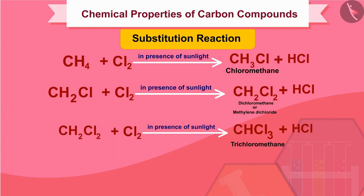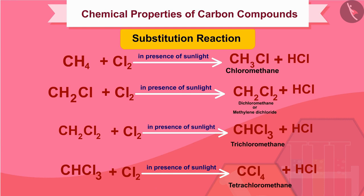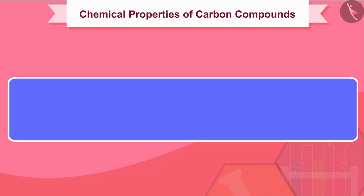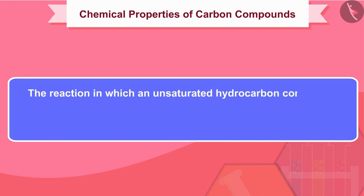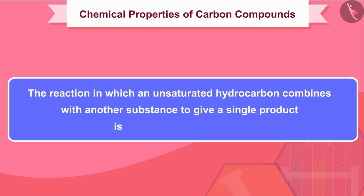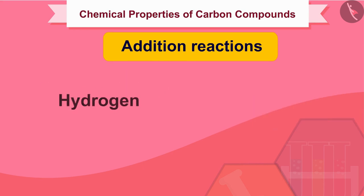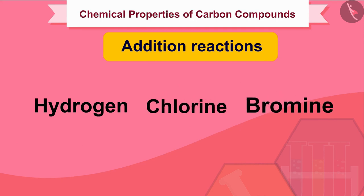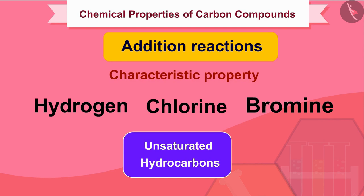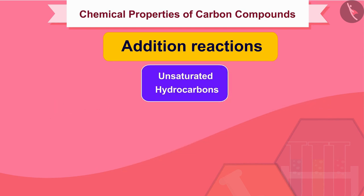Since this substitution is taking place by chlorine, it is called chlorination. The reaction in which an unsaturated hydrocarbon combines with another substance to give a single product is called an addition reaction. Addition reactions, like the addition of hydrogen, chlorine, or bromine, are a characteristic property of unsaturated hydrocarbons.